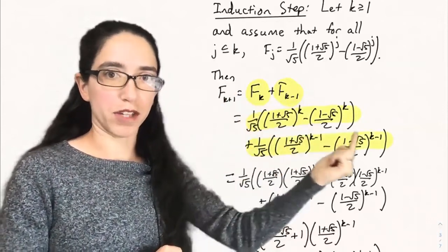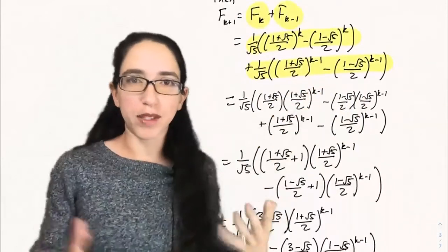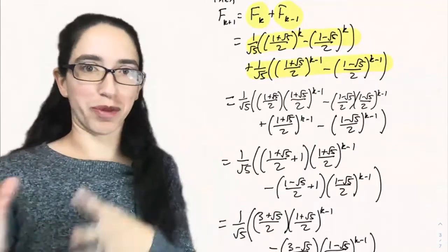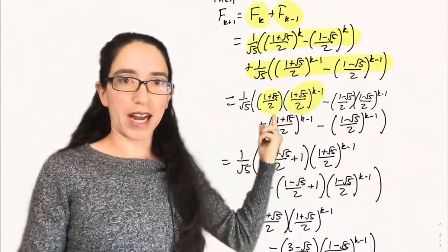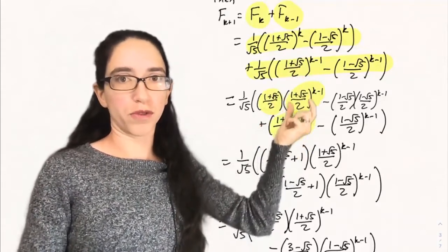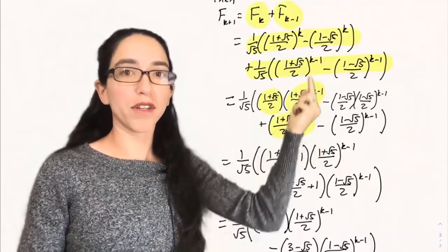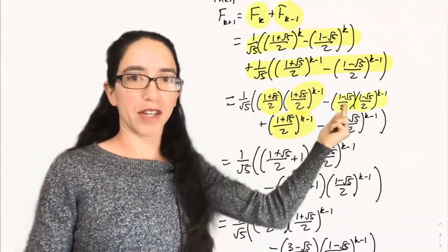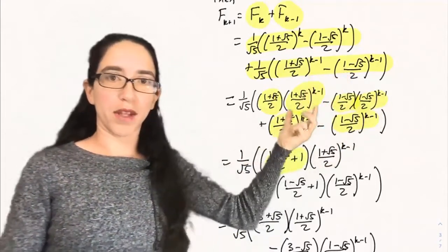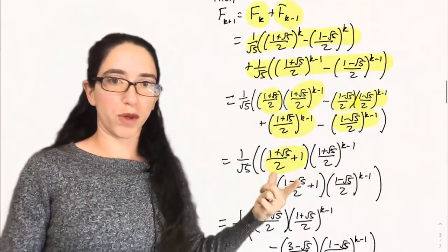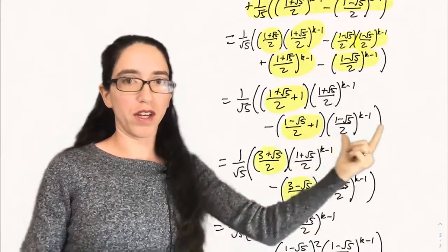So we can plug in that formula for Fₖ and Fₖ₋₁ by putting k and k−1 in the exponents. Now we want to simplify this and show it's the formula for k+1. To combine the two terms with (1+√5)/2, let's factor a (1+√5)/2 out of the (1+√5)/2 to the k power. So we get two of these numbers to the k−1 power to combine. Similarly, we factor out a (1−√5)/2 from the other term.